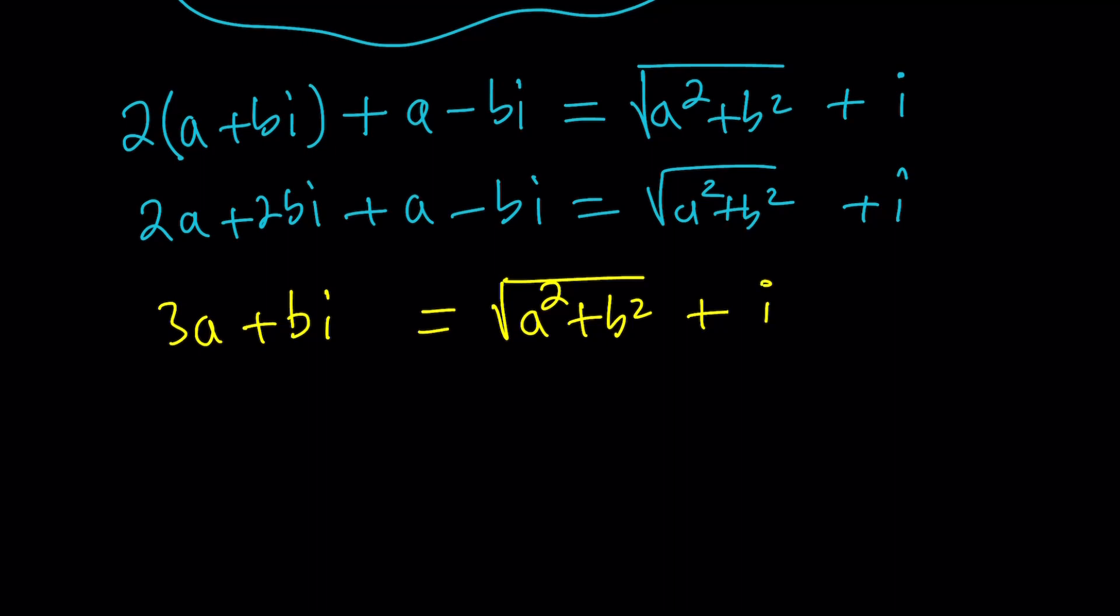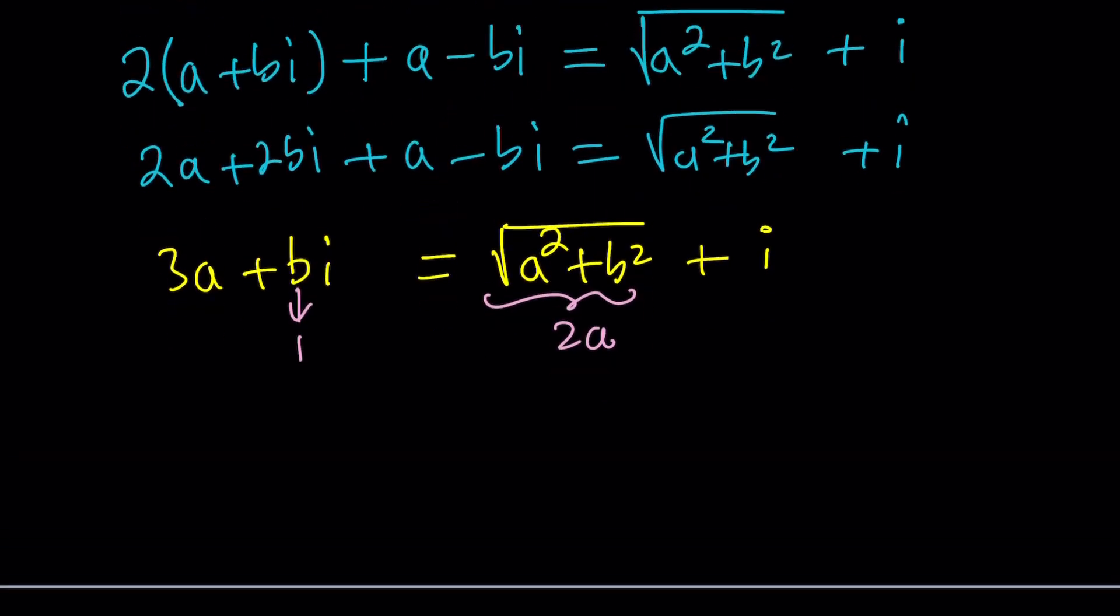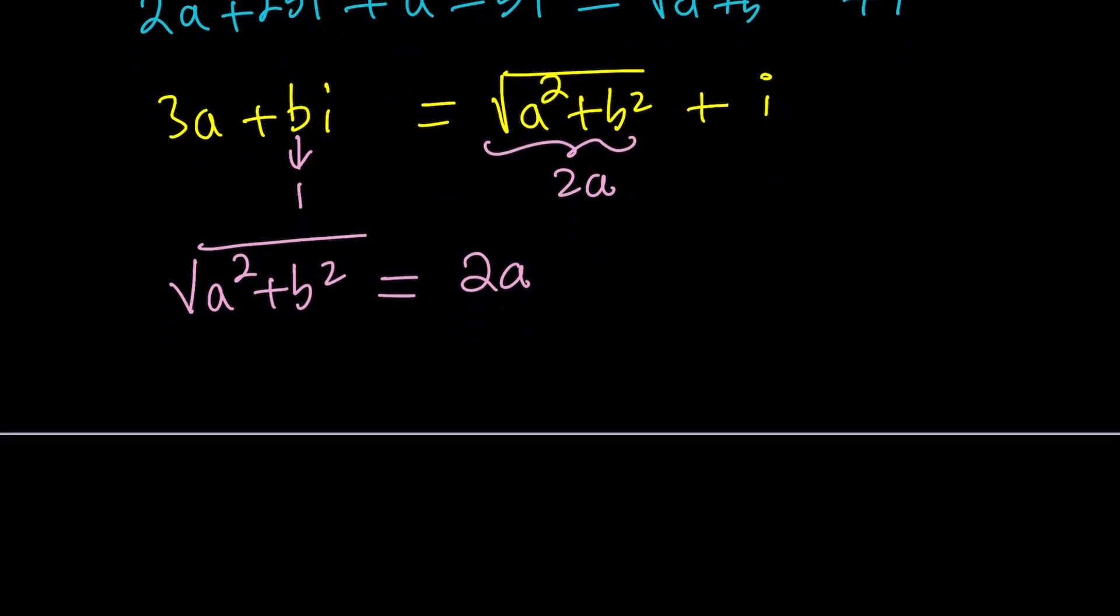I can be written as 1I which means on the left hand side we have the real part as 3A which should equal this quantity and we have the imaginary part on the left as B which should equal 1 because 1I is the same thing as I. Let's set this up as a system of equations. From here we get square root of A squared plus B squared equals 3A and the second equation gives us B equals 1. Going with the second first will be easier.